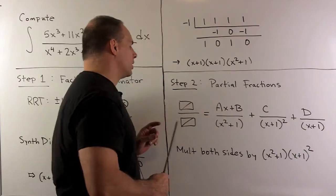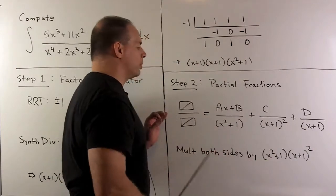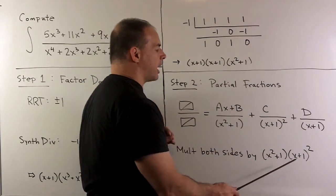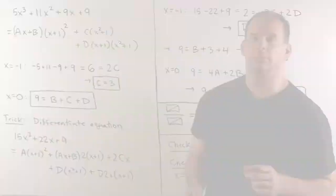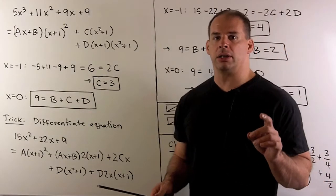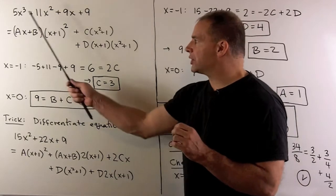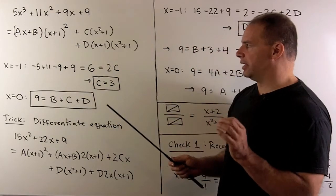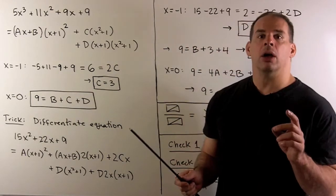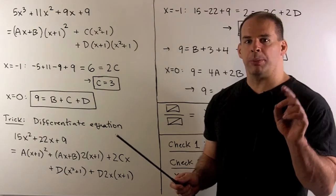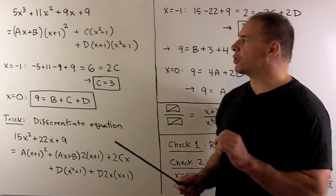Next step, we clear out the denominators. We'll multiply both sides by x squared plus 1, x plus 1 squared. With our denominator cleared, we can work with this equation to solve for a, b, c, and d. Our strategy is to pick points for x that make most of our terms go away.